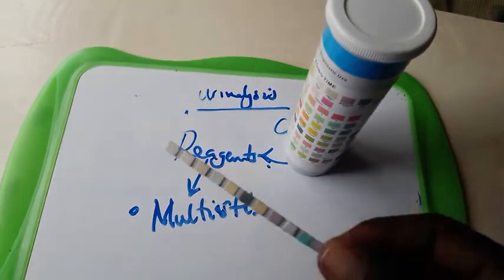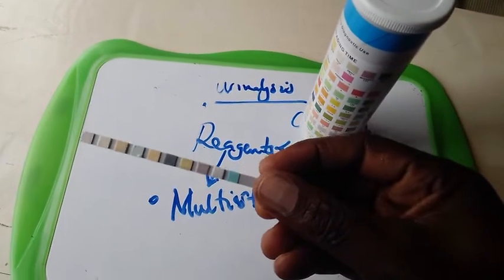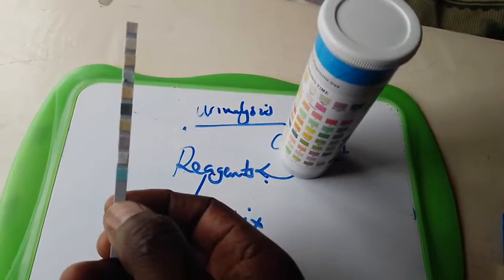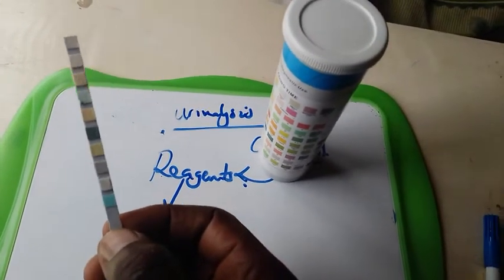The strip in the multisticks looks like this. This is a strip. You hold it here, the non-impregnated end. That's the end that you hold, not where there are those colors.